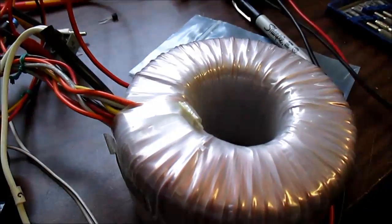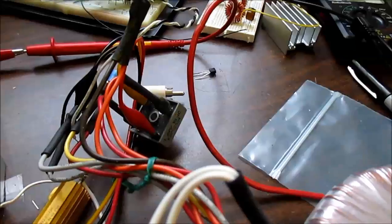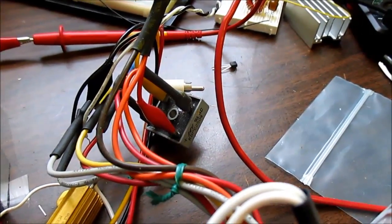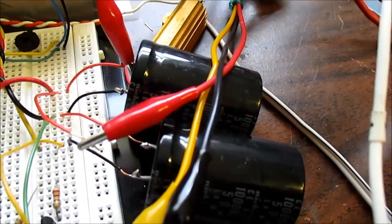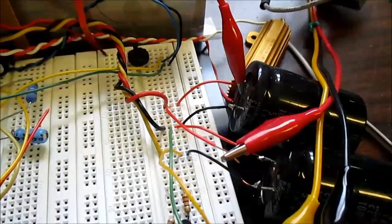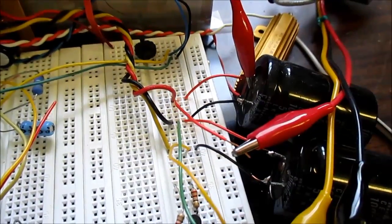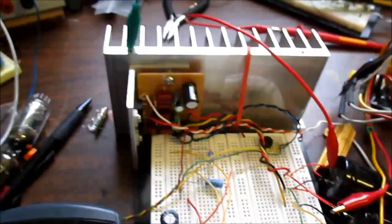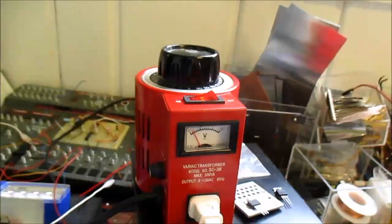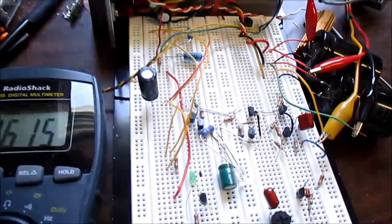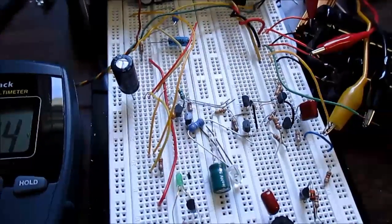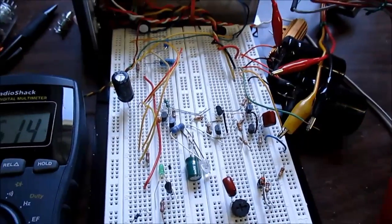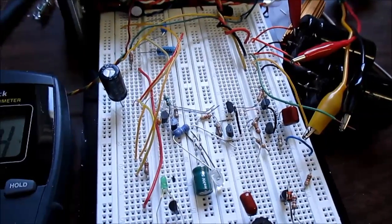So I have this toroidal transformer connected to the full wave bridge. A couple of capacitors configured into split supply mode for the TDA 2050 bridge amp. And I'll adjust the variac so I can get the proper voltage under load and we can get a good measurement, hopefully.